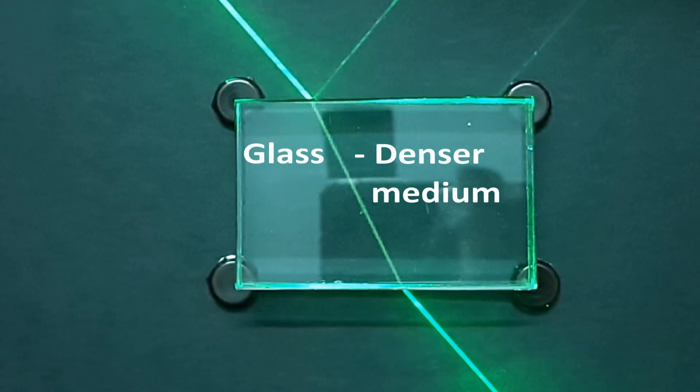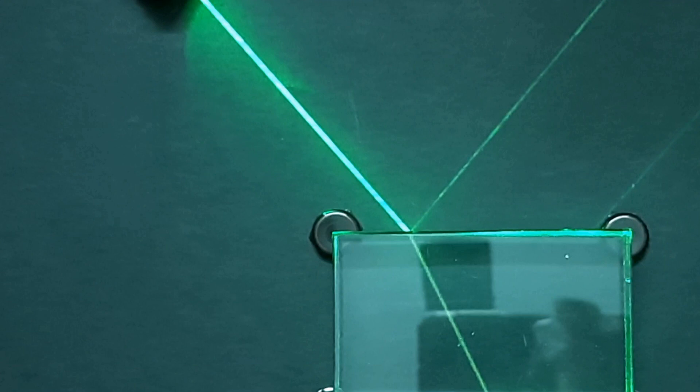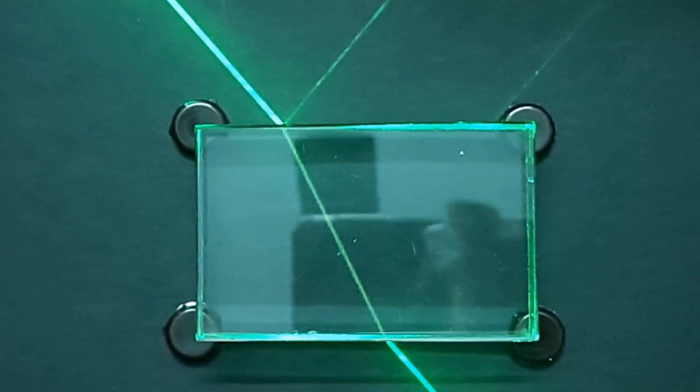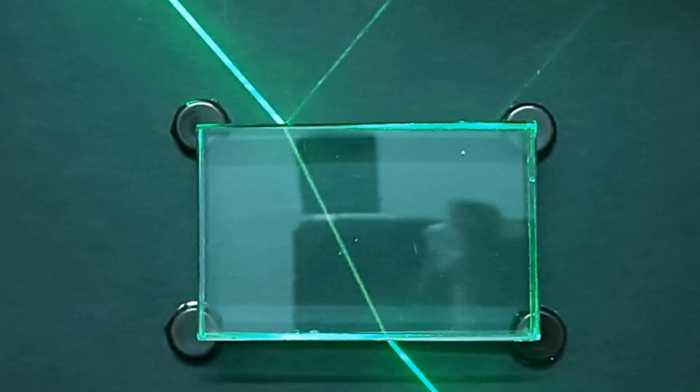The ray which is falling on the glass slab is known as incident ray. The incident ray on entering the glass slab bends and then it is known as refracted ray.